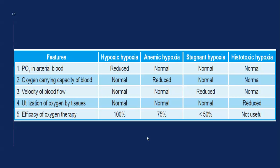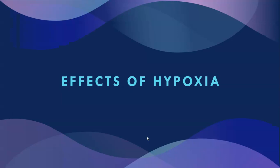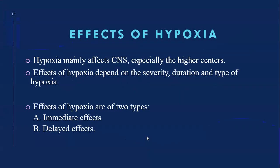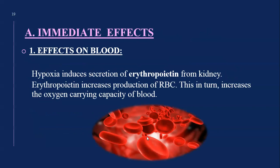Now we come to the effects of hypoxia. Hypoxia mainly affects the central nervous system, especially the higher centers. The effects depend on the severity, duration, and type of hypoxia. We will classify the effects into two types: immediate effects and delayed effects.